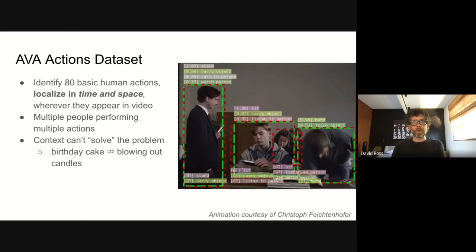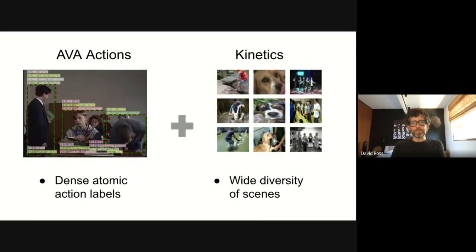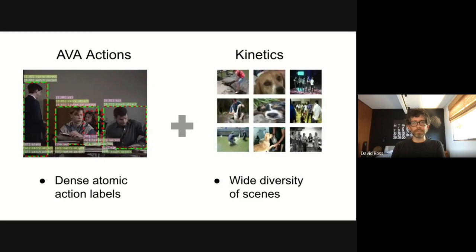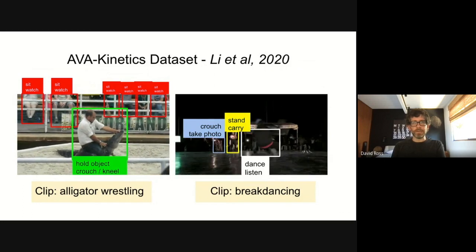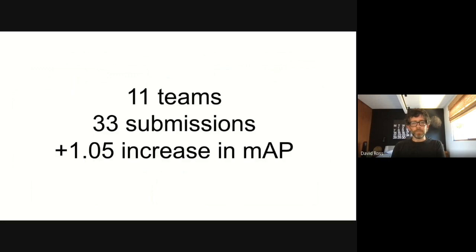AVA is challenging because the task requires correctly identifying potentially multiple people performing multiple actions. Last year we introduced a larger dataset by applying the dense atomic action labels from AVA to the wide diversity of natural scenes depicted in the well-known Kinetics dataset. The resulting dataset, AVA Kinetics, is much larger with 1.6 times as many annotated frames and over 500 times as many unique videos. The task is to localize the 60 most common AVA classes in space and time on the combined AVA Kinetics test set, and the performance metric is mean average precision evaluated at 0.5 IOU.